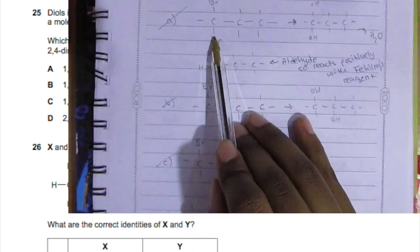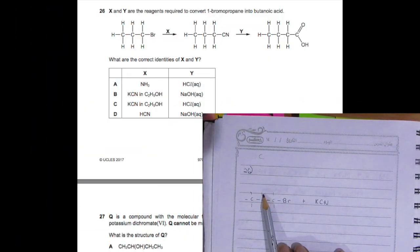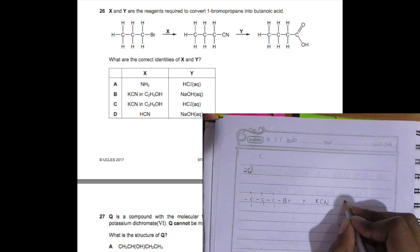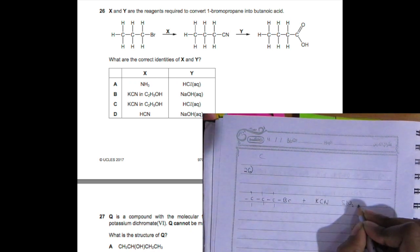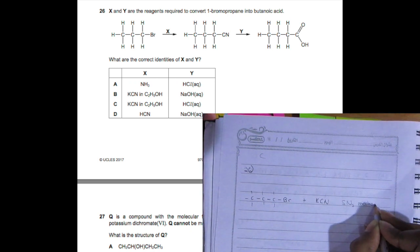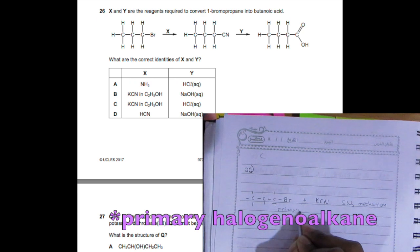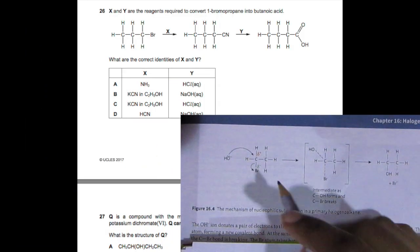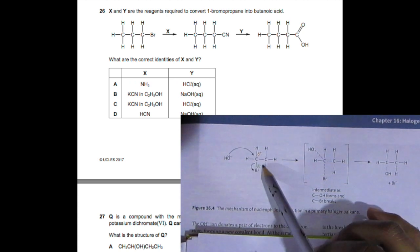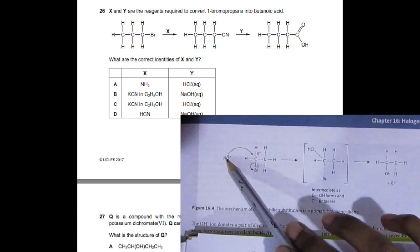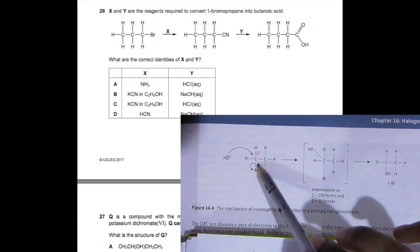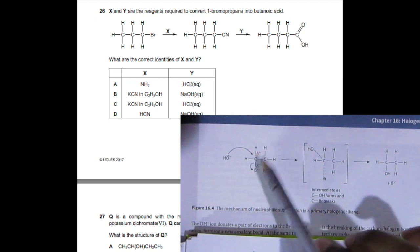Okay, for question 26, this will react with the KCN with an SN2 mechanism because this is a primary carbon. So basically this is a nucleophilic substitution. This is how the mechanism would look, and the textbook explains it really well, so I'm just gonna leave it to that.